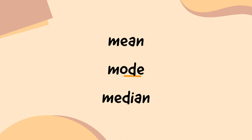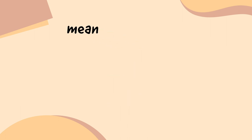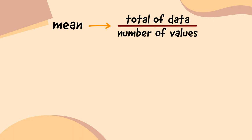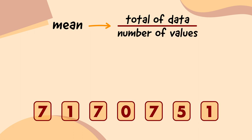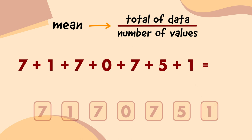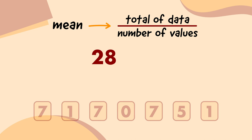Mean is the most common type of average. It's calculated by adding up all the data and dividing it by the number of values there are. So for this data set, we do 7 plus 1 plus 7 plus 0 plus 7 plus 5 plus 1, which equals 28. Then, because there are seven values in total, we divide 28 by 7, which gives us a mean of 4.